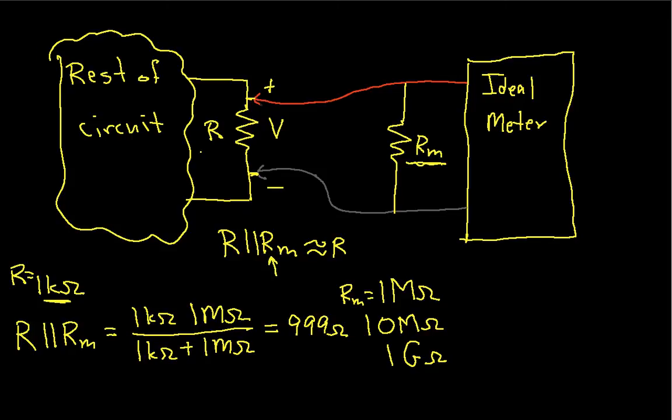So if R, if this R is small relative to RM, then things are good. On the other hand, suppose now that R is 1 megohm.